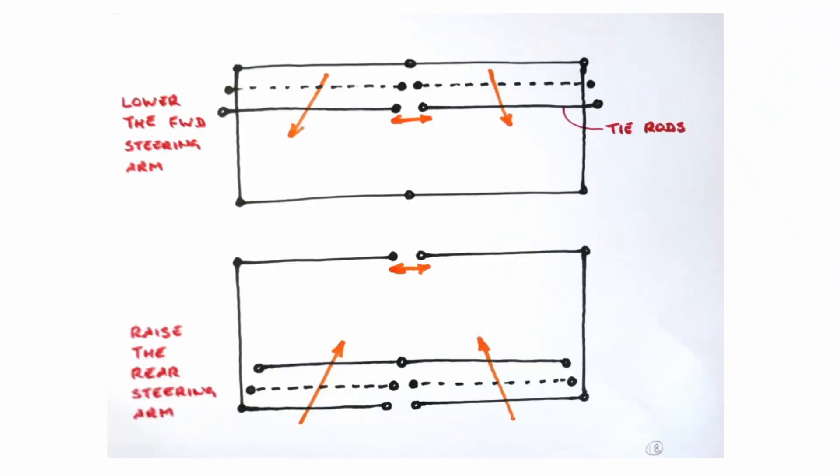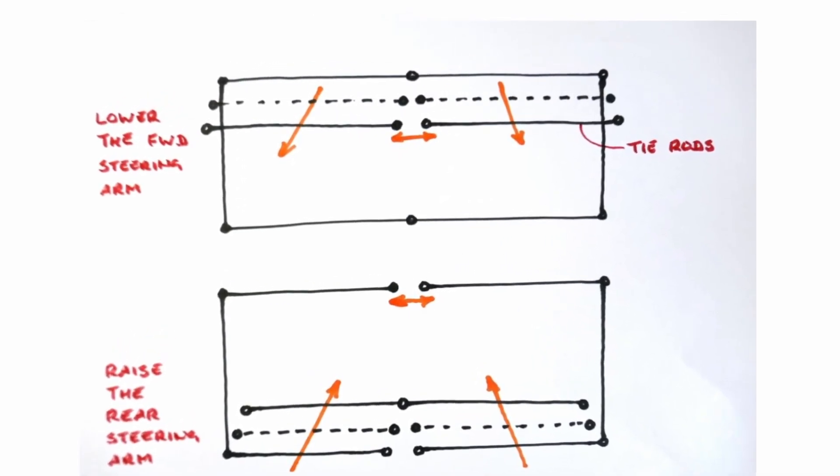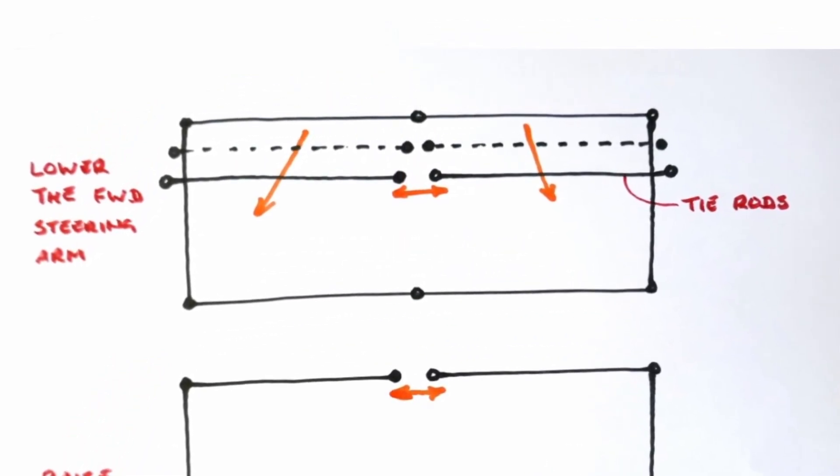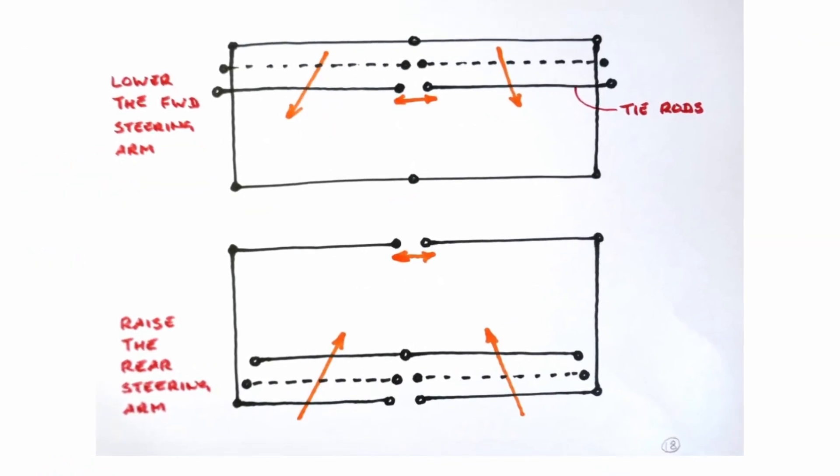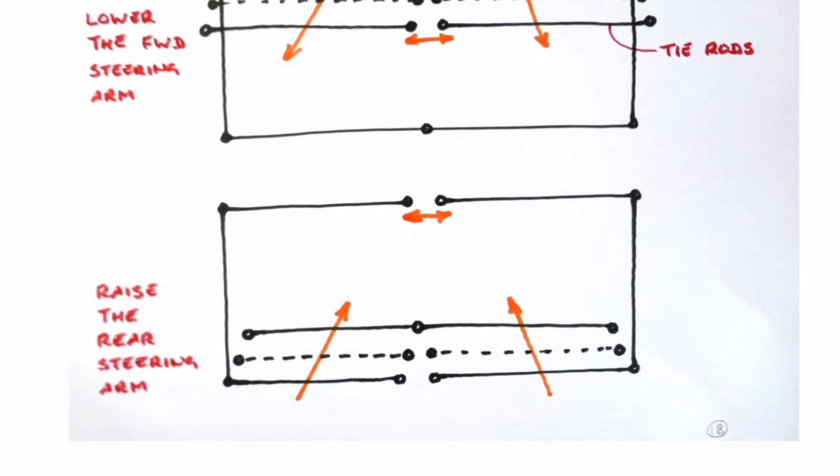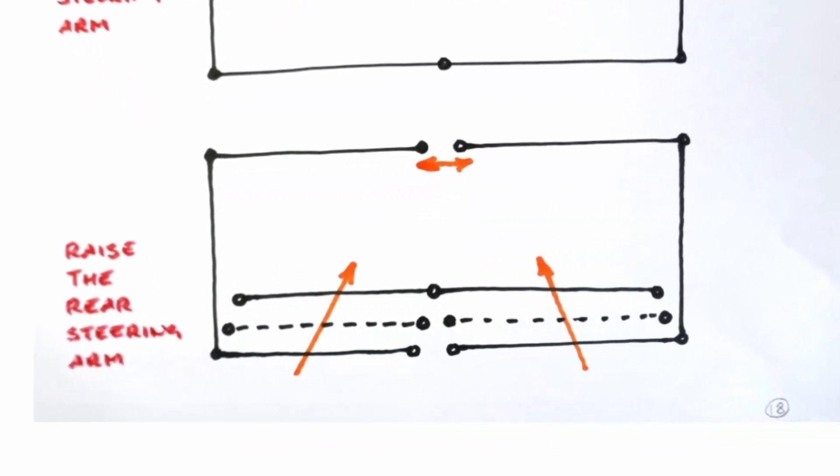Furthermore, this suggests that if we have an arrangement where the wishbones are centrally pivoted and not split, this tends to favour forward steering arms with the tie rod positioned high up in order to get the tie rod the correct length. But if we have separated wishbones, then this tends to favour rearward pointing steering arms, which are positioned lower down in order for the tie rod to be the correct length.